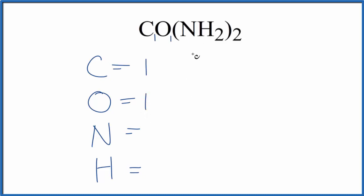For nitrogen, nothing written so we assume it to be one, but this two here goes to the whole thing in parentheses. So two times one equals two nitrogen atoms. Two times two, we have four hydrogen atoms. So we have a total of eight atoms in urea.